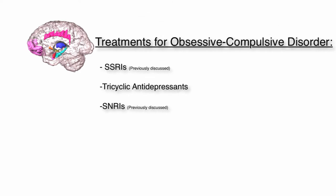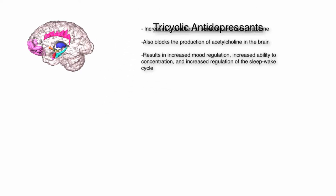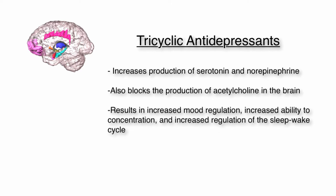The common treatments for OCD include SSRIs, tricyclic antidepressants, and SNRIs. Using SSRIs and SNRIs in OCD allows the balance of serotonin and norepinephrine to be restored in the mesolimbic system. Tricyclic antidepressants act to increase the production of norepinephrine and serotonin, while blocking acetylcholine production. This causes increased mood regulation, increased regulation of the sleep-wake cycle, increased alertness and arousal, and increased ability to concentrate. It is important to note that tricyclic antidepressants are not used as commonly as SSRIs and SNRIs due to their harmful side effects.